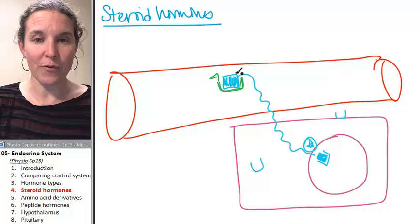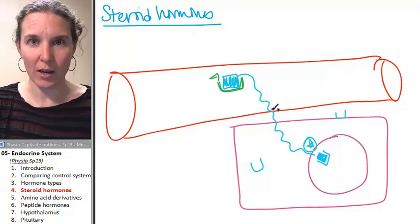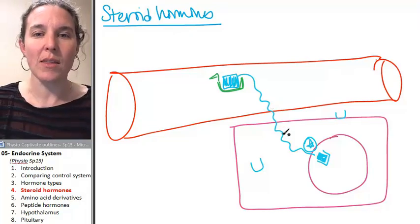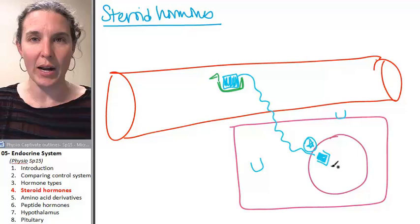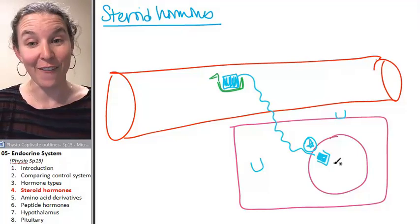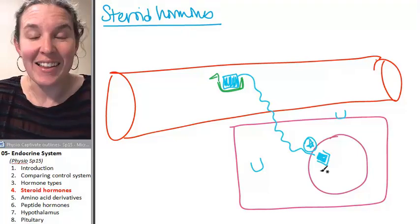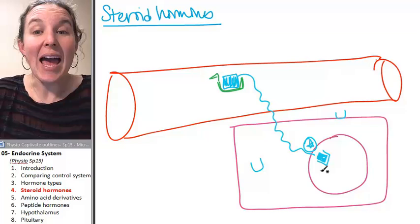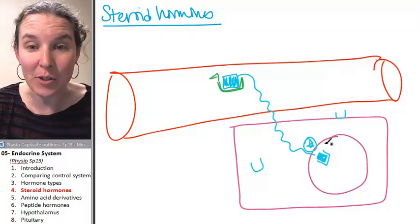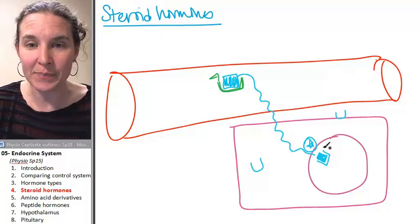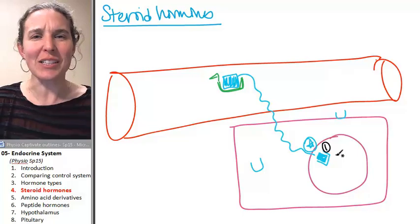Because they're hydrophobic, the steroid hormone just diffuses right in. The action happens when the hormone binds to the receptor. So that's stage one. It's in the nucleus.